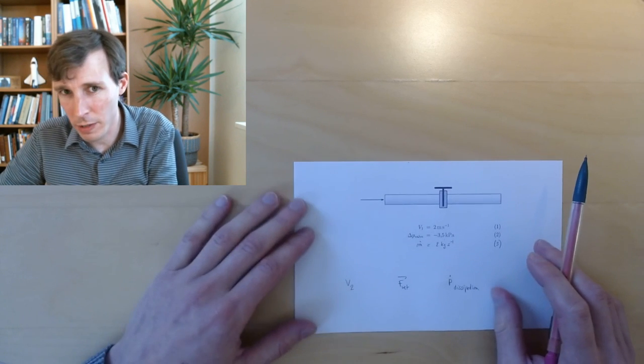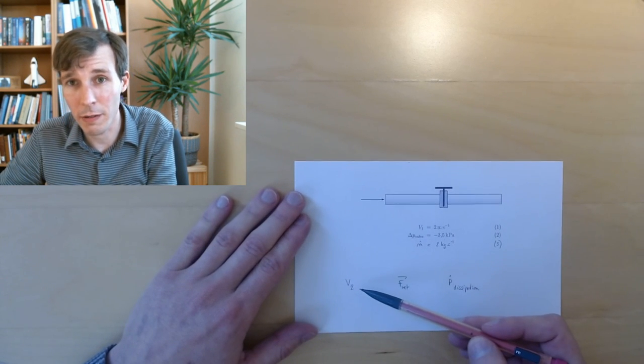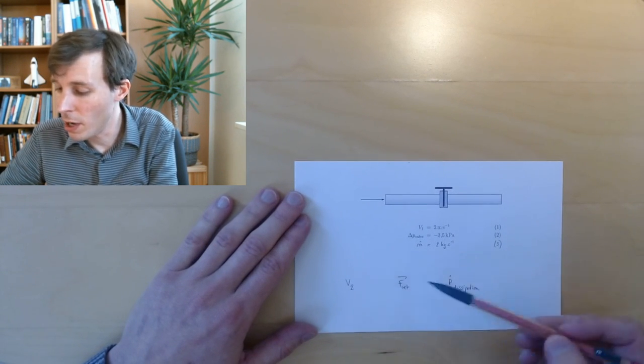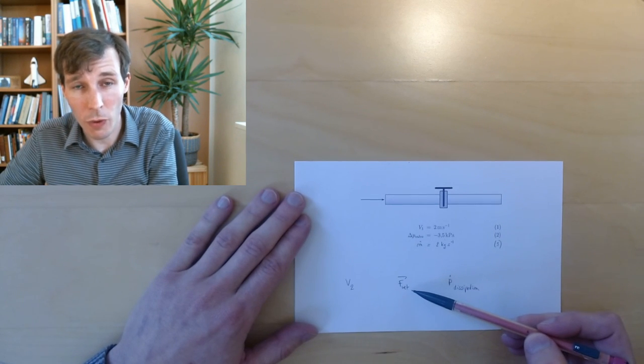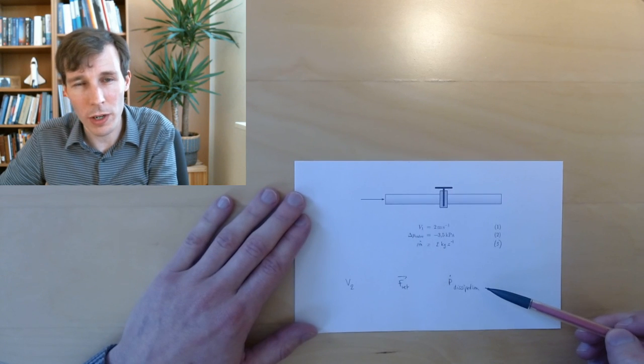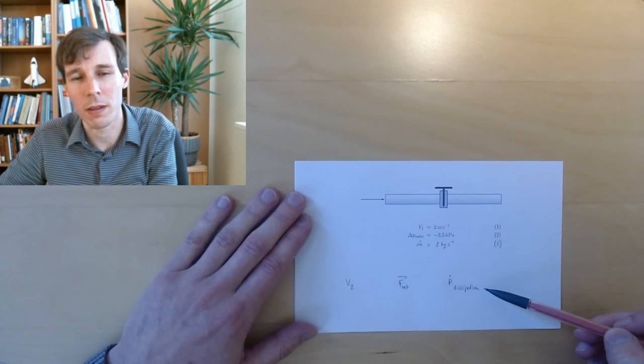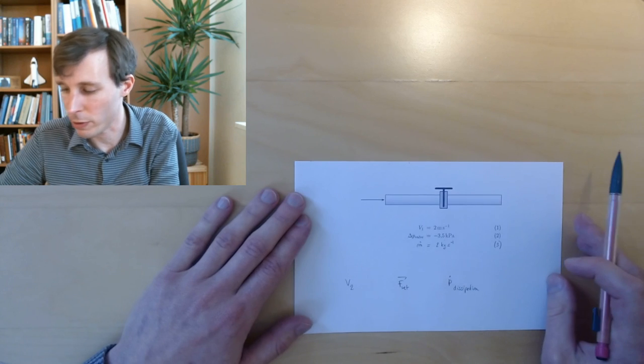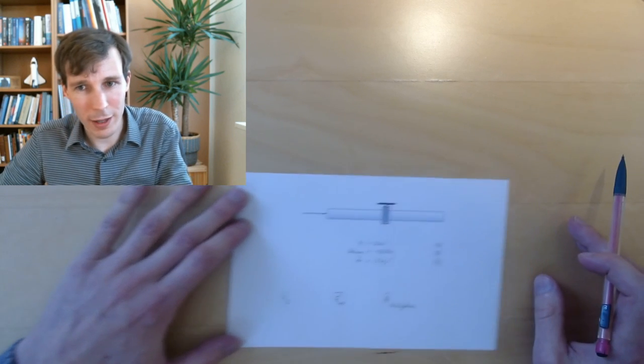We're looking for three informations. One is the outlet velocity V2. The second one is the net force that's applied on the fluid as it transits, and the last question is what is the power dissipated with the valve as the flow goes through.